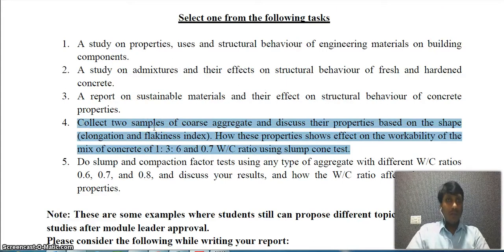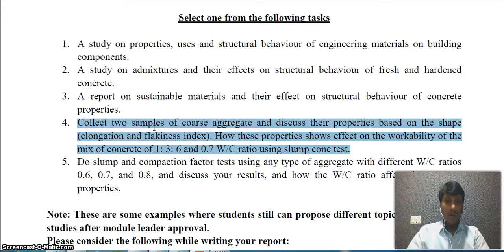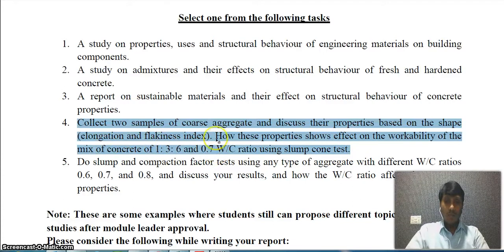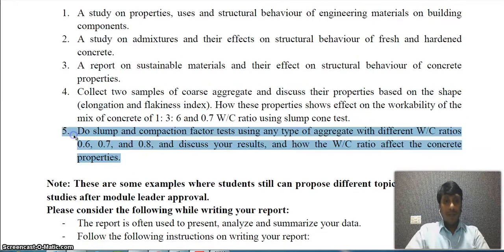In Task 4, you select any two samples of coarse aggregate — for example, one from Rui and one from Alkut. Use these aggregates for the elongation and flakiness index test (Experiment 7), find out how they are graded and what the material properties are. Then use these two aggregates to conduct a slump cone test with a 0.7 water-cement ratio and a concrete mix of 1:3:6, and find out how the two aggregates affect the workability of concrete.